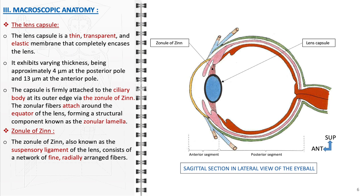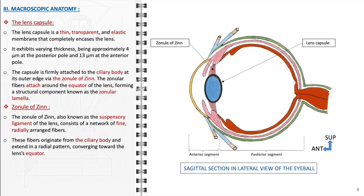The zonule of Zinn, also referred to as the suspensory ligament of the lens, is composed of a complex network of fine, radially arranged fibers. These fibers originate from the ciliary body and radiate outward, converging toward the equator of the lens. Their radial arrangement and tension are vital for the lens's stability and for transmitting forces generated by the ciliary muscles during the accommodation process.